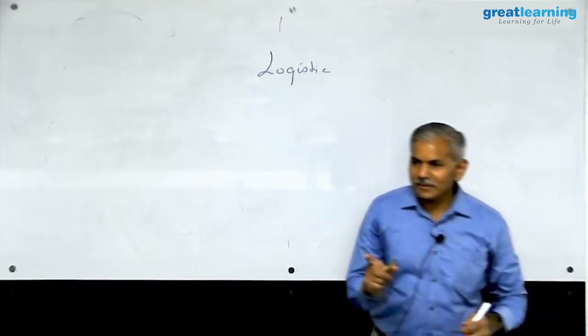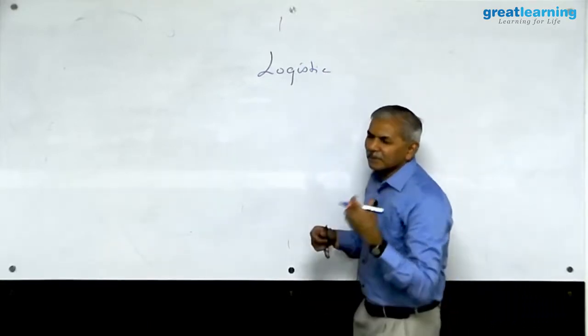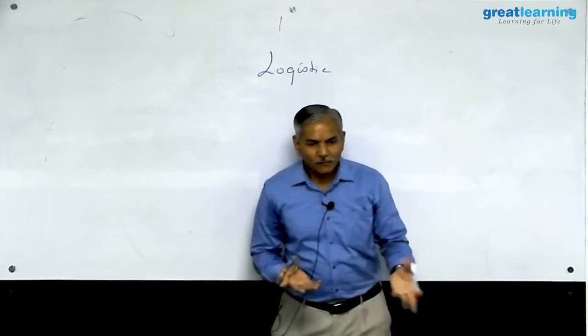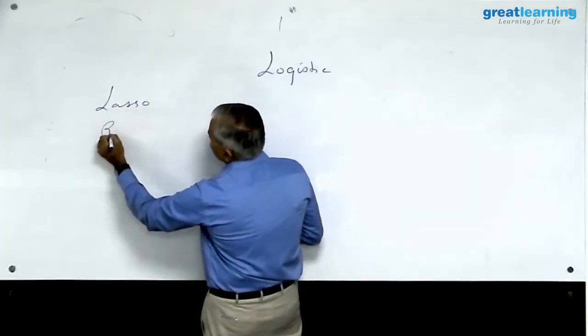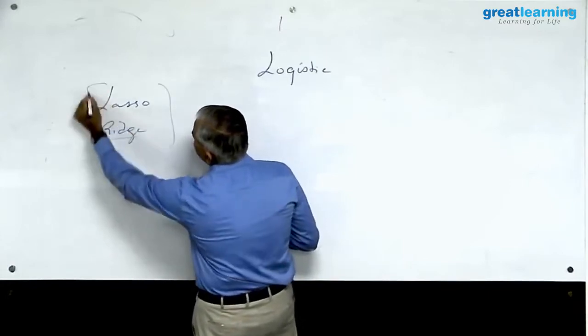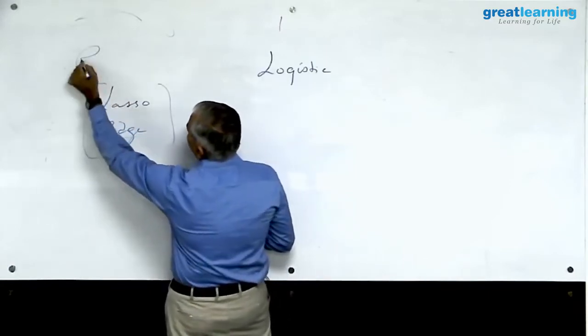One homework I would like to give you is in linear models we never implement linear models in production. What we implement is a variant of that which is called lasso or ridge. These two techniques go under the name of regularization.